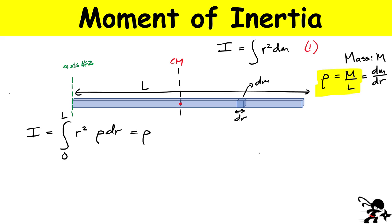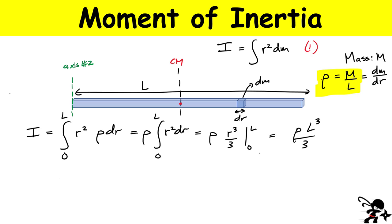Everything else is the same procedure. I take the density out and integrate r squared dr from 0 to L. This gives density times r cubed over 3, evaluated from 0 to L. Substituting the limits: density times L cubed over 3 (the zero term vanishes). Replacing density with M over L and cancelling one L gives the moment of inertia about the edge axis: one-third ML squared. So instead of dividing by 12, we're dividing by 3.